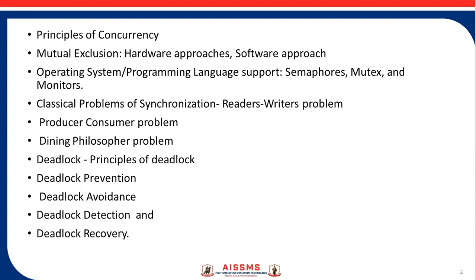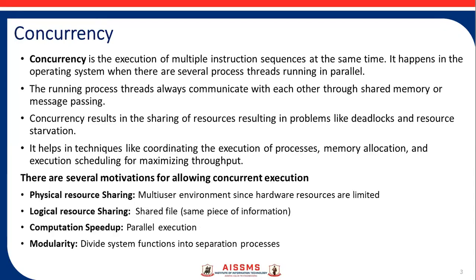What is concurrency? Concurrency is the execution of multiple instruction sequences at the same time in an operating system when there are several process threads running in parallel. The running process threads always communicate with each other through shared memory or message passing. Concurrency results in the sharing of resources, resulting in problems like deadlock and resource starvation. It helps in techniques like coordinating the execution of work processes, memory allocation, and execution scheduling for maximum throughput.